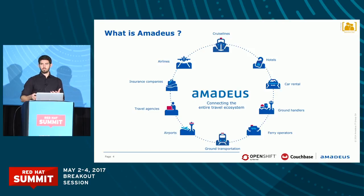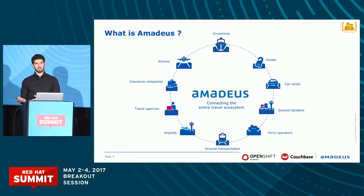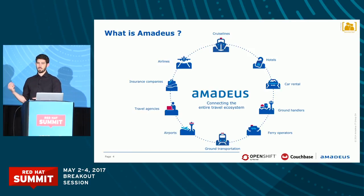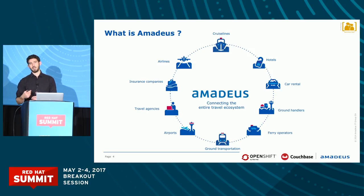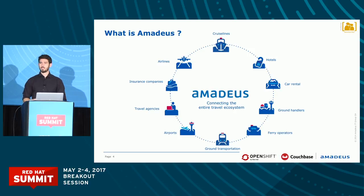Maybe you'll use meta search services to see different price possibilities depending on the day — that's also Amadeus. Probably you don't decide to pay right away. You wait a couple of weeks before getting your ticket. You come back to the website and then the price of the ticket has changed — that's Amadeus revenue management system, which is there to maximize the benefits of the airlines. So this time you book your flight — that's probably Amadeus booking service running behind.